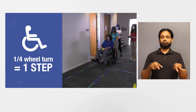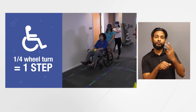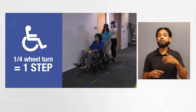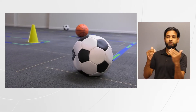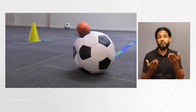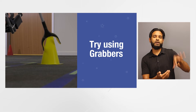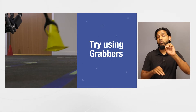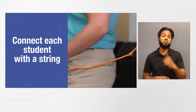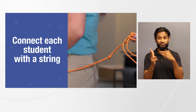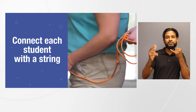This activity can also be adapted for students with mobility impairments. For wheelchair users, remember one quarter turn of the wheel equals one step. You may also want to choose taller objects for your rock samples. Another option is to incorporate grabbers when students are unable to pick up rock samples. Another adaptation may include attaching a string between the three rover students, connecting them even if they are unable to hold on to one another with their hands.